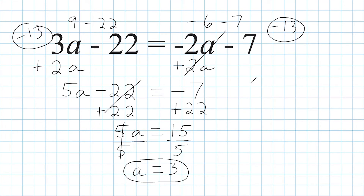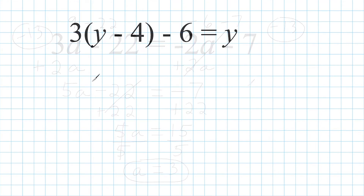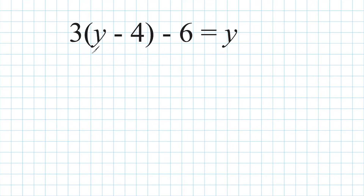Alright, let's go ahead and do another example. Once again, we have a variable on both sides of the equation. But notice on the left-hand side, we have a set of parentheses with a number on the outside, which indicates multiplication. So what we have to do first is use the distributive property to rewrite our equation.